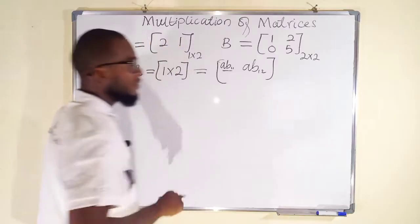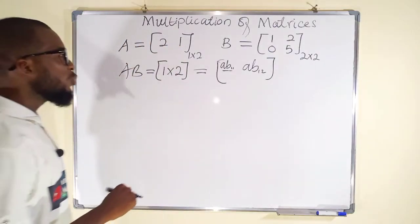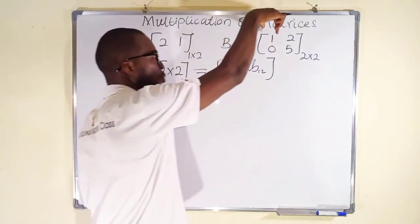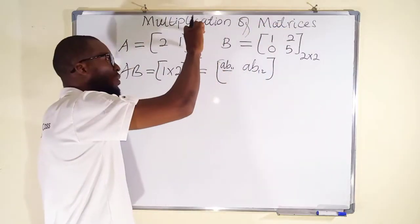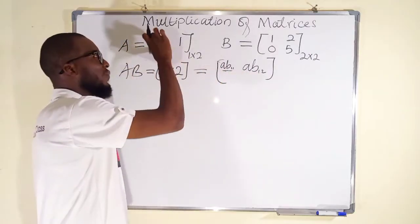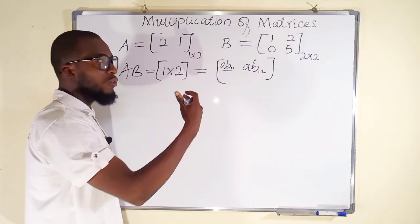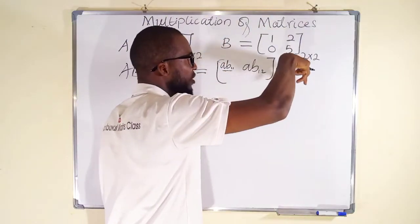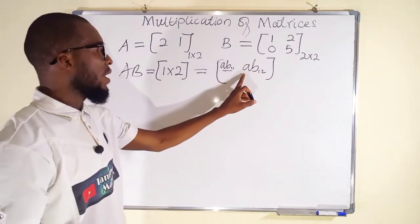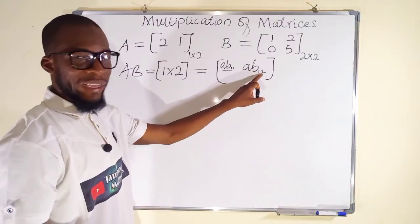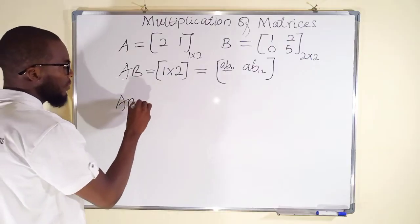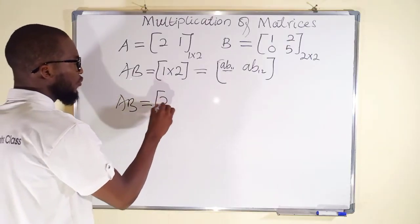To obtain the first element, we multiply the whole row by the first column — that is first row times first column. For the second element, we take the same row and multiply by the second column to obtain AB(1,2), which is the element in the first row, second column.